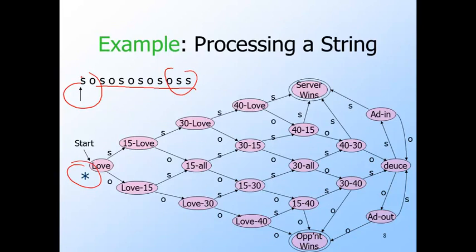We're going to follow the transition out of the state love, labeled s. Here we've made the first transition. The next input is o, and we're in state 15 love. The transition from that state on o is to state 15 all. In state 15 all, we see another s on the input, so we go to state 30-15. And o takes us to state 30 all.